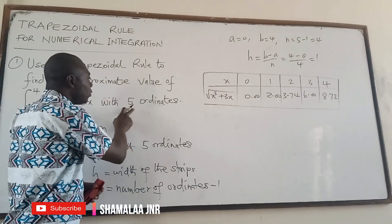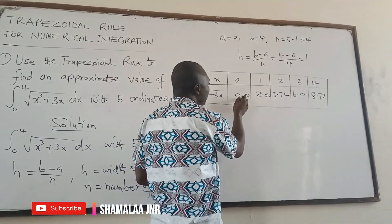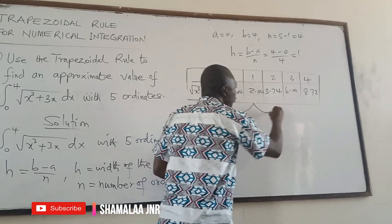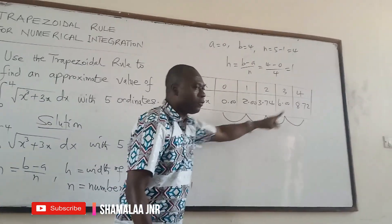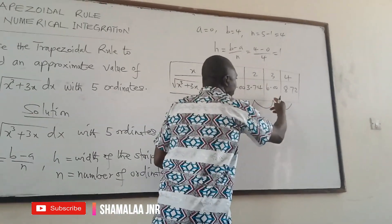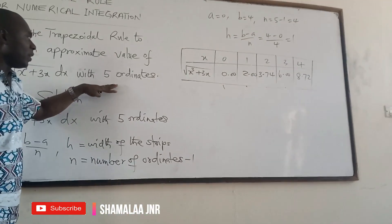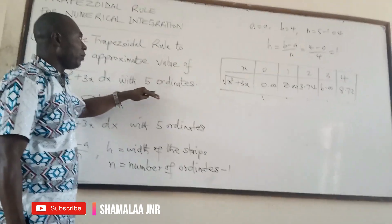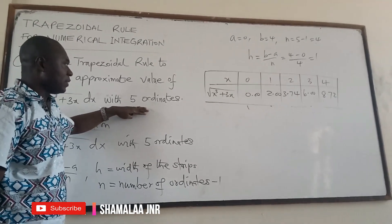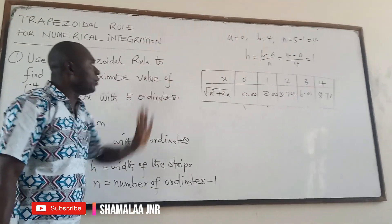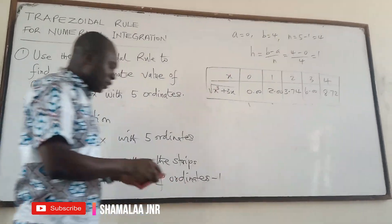Instead of five ordinates you could have said four intervals. If you count the gaps: 0 to 1, 1 to 2, 2 to 3, 3 to 4 — that is four intervals, giving five ordinates. So if intervals are given, n equals that number directly; if ordinates are given, subtract one to get n, and use that to calculate h.